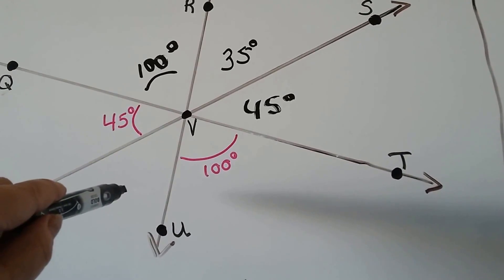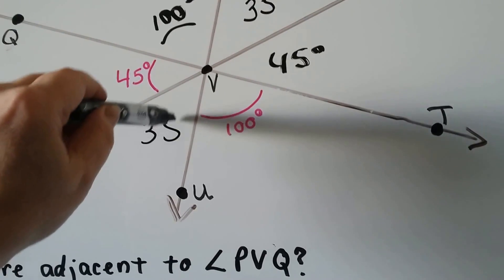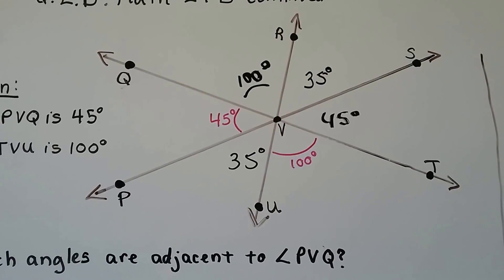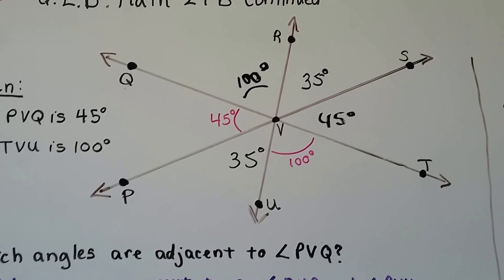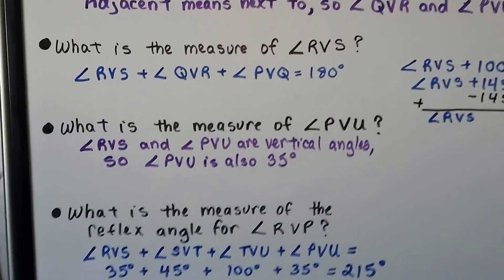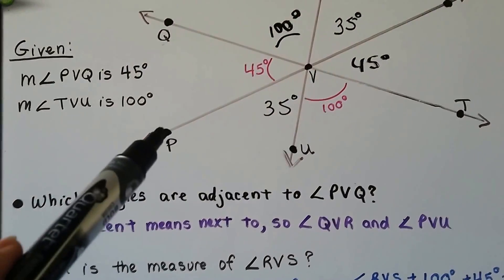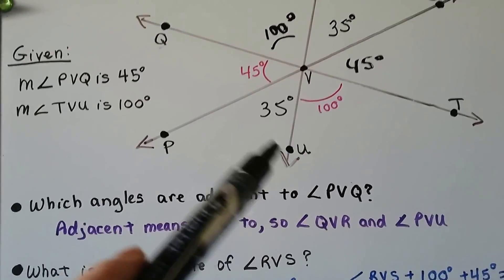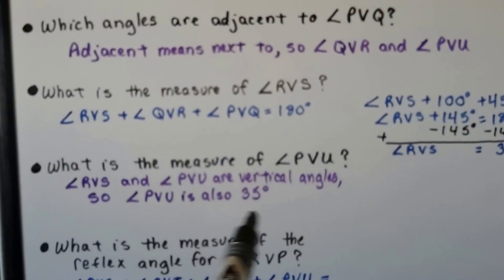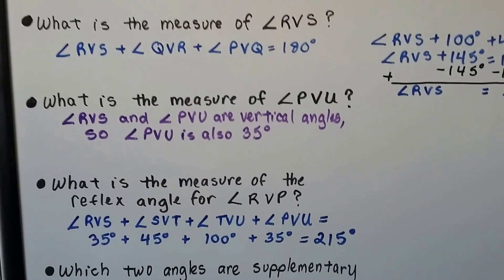If angle RVS is 35 degrees, we know its vertical angle is also 35 degrees. So even though there were six angles and we had only two measures, we were able to find all the measures of all the angles. Angle PVU is vertical to the 35-degree angle, so it has to be 35 degrees — they're vertical angles.